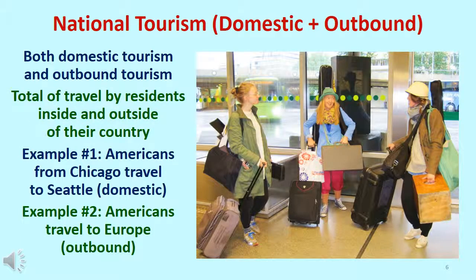National tourism consists of both domestic tourism and outbound tourism. It counts the total tourism activities of the residents of a specific country, to include both their travel within the country and their travel abroad. For example, three American college students from Chicago visiting Seattle are domestic tourists, and when they travel around Europe for the summer, they are outbound tourists. Both of their trips are counted by the United States as part of its national tourism totals.